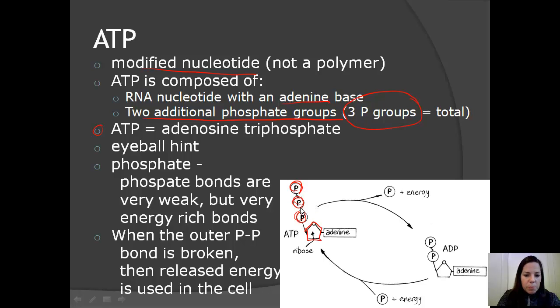Now the phosphate-phosphate bonds are very weak, but they're actually very energy-rich bonds. So when the cell needs some energy, what happens is it actually breaks this outer bond here, and that phosphate gets released as well as energy, and then the ATP becomes ADP. When a phosphate bond is added back onto ADP using energy, then ATP will again store that energy for future use in the cell. This is called the ATP cycle, and it's happening over and over again constantly within the cells of our body.